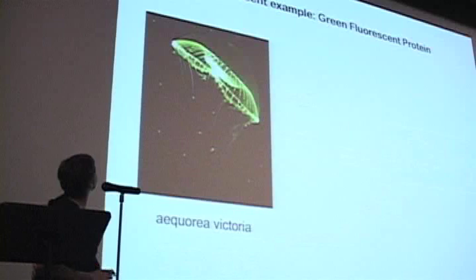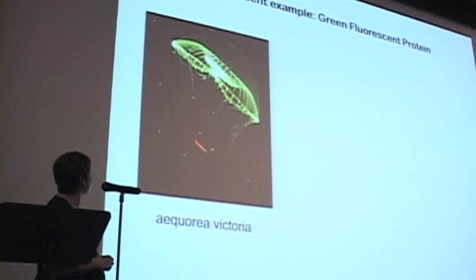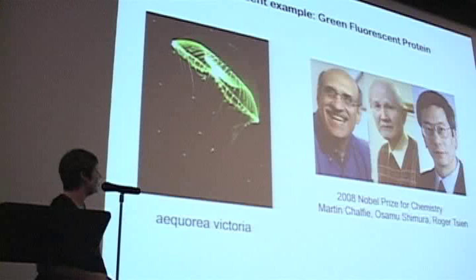A more recent example of a gene from one organism that is being widely used and expressed in other organisms is the gene encoding green fluorescent protein, which is originally isolated from this jellyfish.